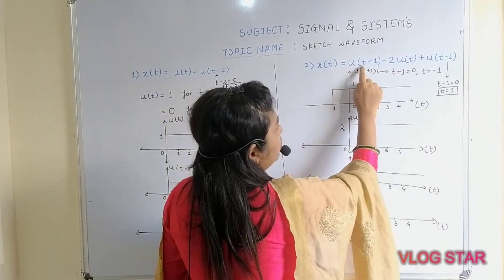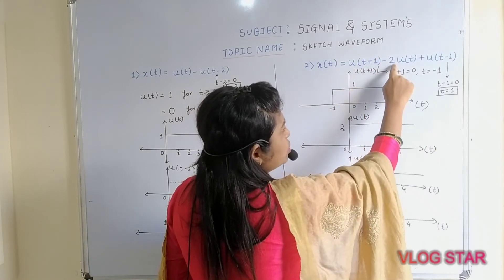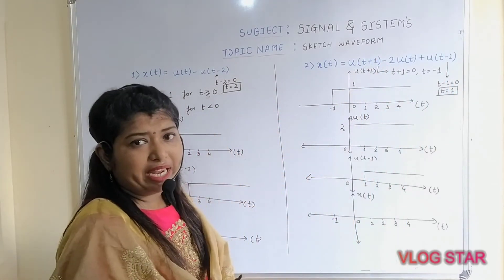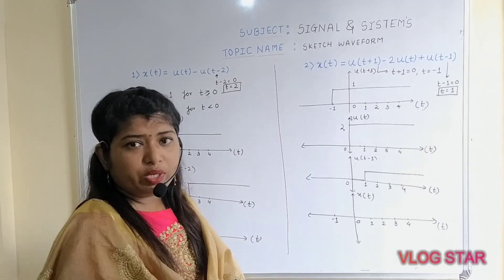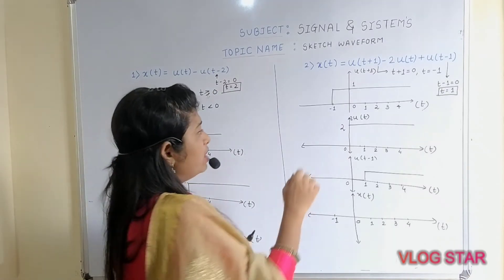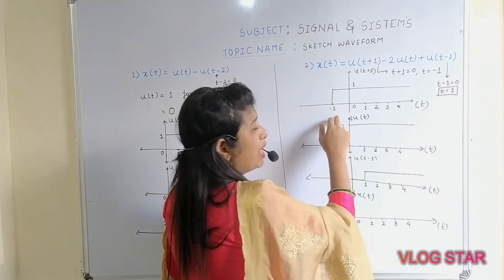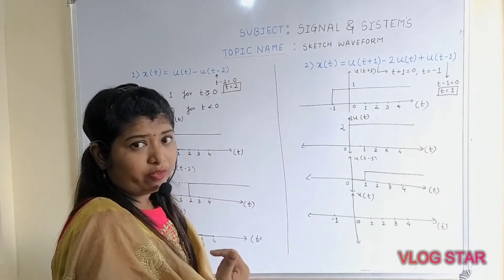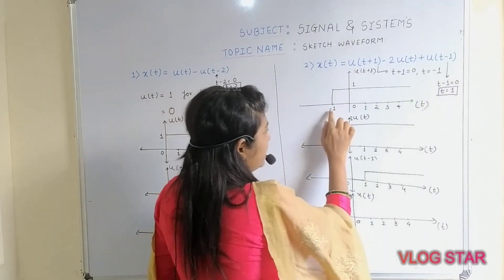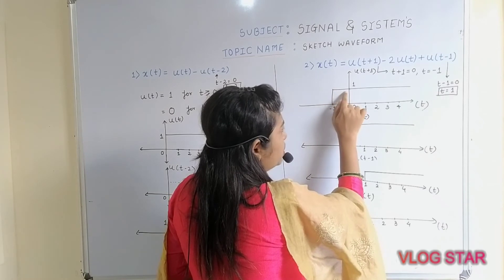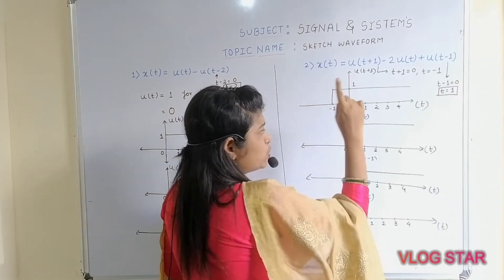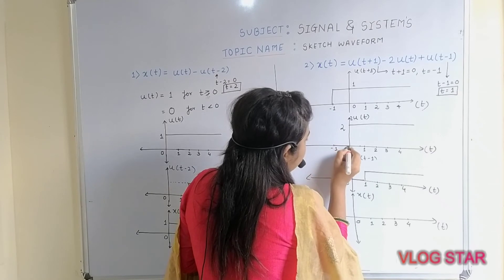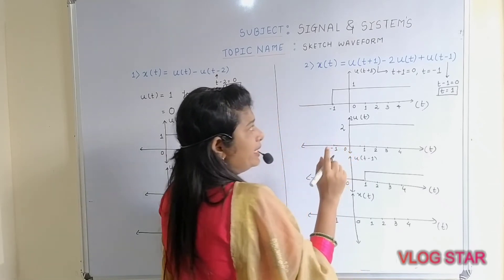The operation to perform is: u(t + 1) − 2·u(t) + u(t − 1). You need to add and subtract the amplitudes of each signal. For range −1 to 0: u(t + 1) amplitude is 1, u(t) amplitude is 0.